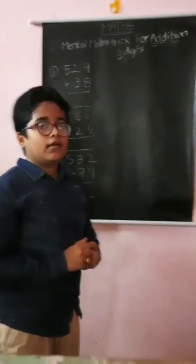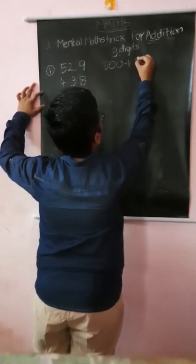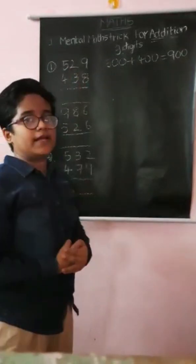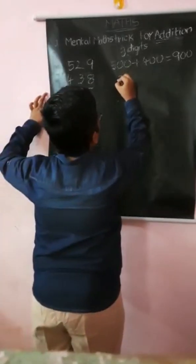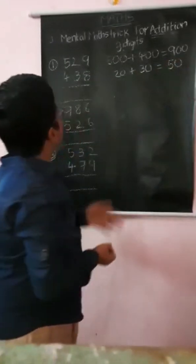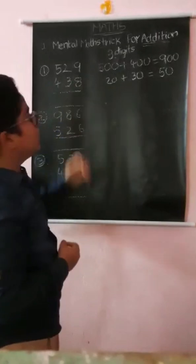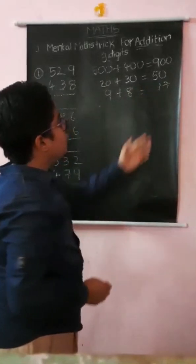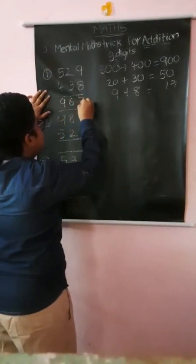In the hundreds place, the number is 5 and downwards the number is 4. Then 500 plus 400 is 900. In the tens place, the top number is 2 and the downwards number is 3. Then 20 plus 30 is 50. Next in the ones place, the number is 9 on top and 8 below. 9 plus 8 is 17. Now total: 900 plus 50 is 950, plus 17 is 967. So 967 is your answer.